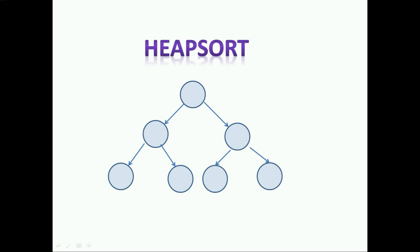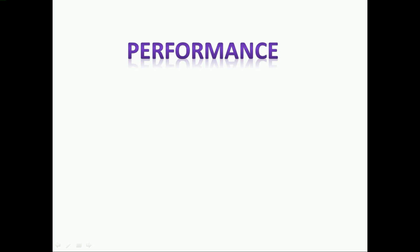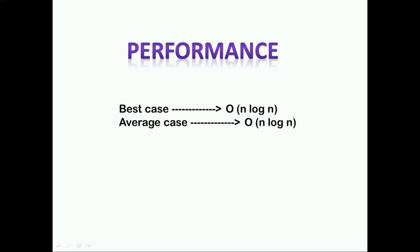This process keeps repeating until we get a fully sorted list of elements. Now take a look at its performance: the best case, average case, and worst case performance are all the same — that is O(n log n). This means whether the given list is already sorted, partially sorted, or in totally reversed order, this algorithm gives the same performance in all three cases.